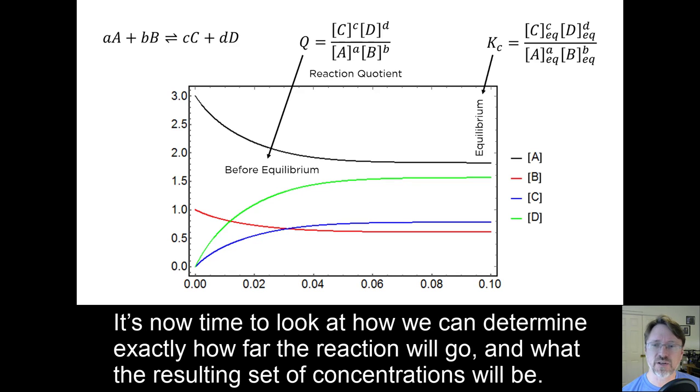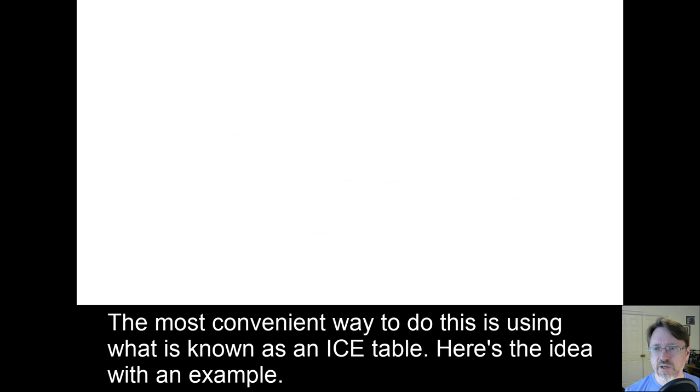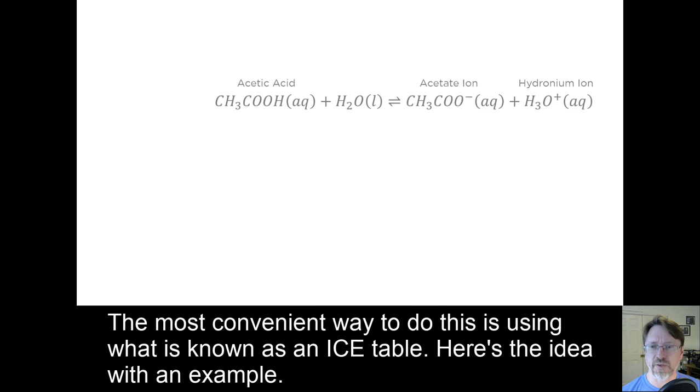It's now time to look at how we can determine exactly how far the reaction will go, and what the resulting set of concentrations will be. The most convenient way to do this is using what is known as an ICE table. Here's the idea with an example.